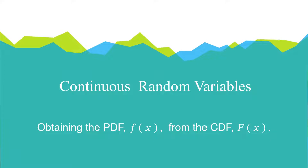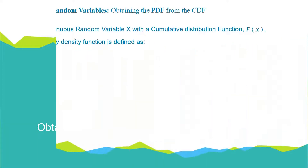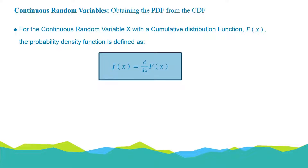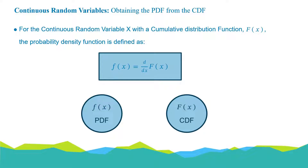In this video, we're going to be looking at how we can find the probability density function f of x from the cumulative distribution function. For the continuous random variable x with the cumulative distribution function capital F of x, the probability density function is defined as f of x equal to the derivative with respect to x of capital F of x, which is the CDF. This is how we obtain a PDF from the CDF, since the CDF is obtained by integrating the PDF, and so the reverse will do the opposite.